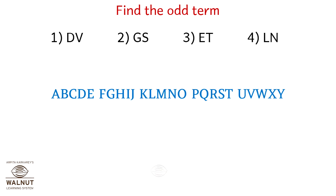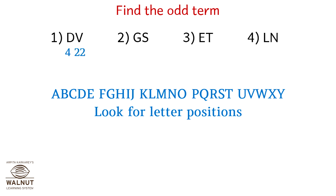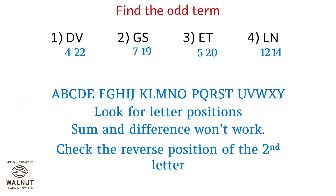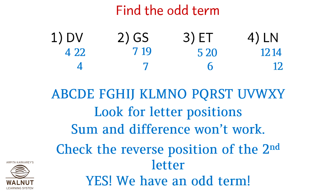Find the odd term from the given series. Let's write down the letter positions. Sum and differences are not working. Check the reverse position of the second letter: the reverse position of V is 4, the reverse position of S is 7, the reverse position of T is 6, and the reverse position of N is 12. So we know which one is the odd one out — it's option number 3.